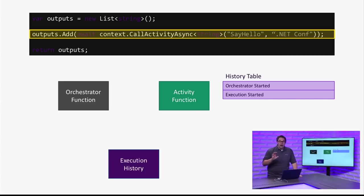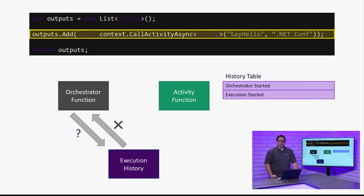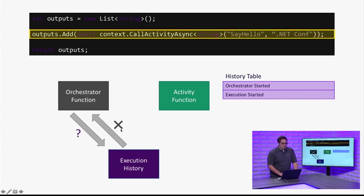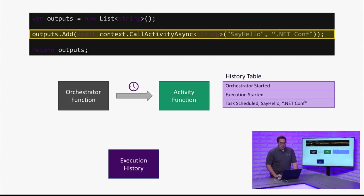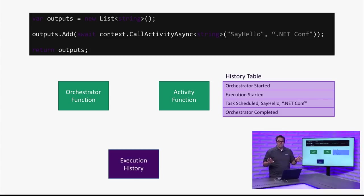Instead of just automatically calling the activity function, the orchestrator function actually goes to the execution history. It looks in the logs of the state of this function and says: have I already done this? Did I already tell sayHello to say hello to .NET Conf? In this case, the execution history says no, you haven't done this yet. So the orchestrator says cool, that means I need to do it — it queues some work, saying: hey, sayHello function, whenever you get a second, you need to say hello to .NET Conf. Then the orchestrator function completes — it just goes away. It's done with its job for now. This is how it can work in a serverless way. That orchestration function after it schedules the work is now scaled to zero, so you're actually not getting charged for that orchestration piece anymore.